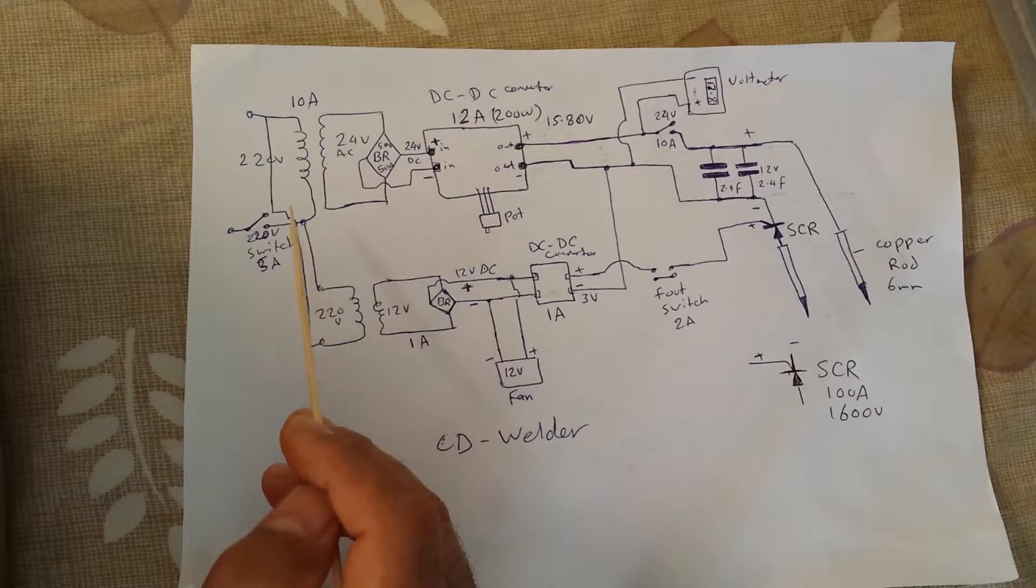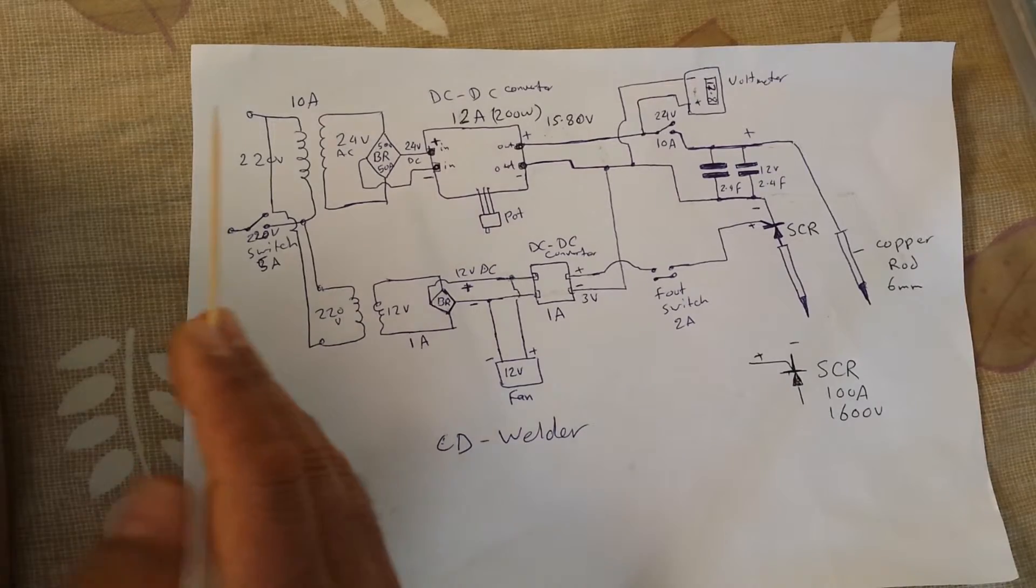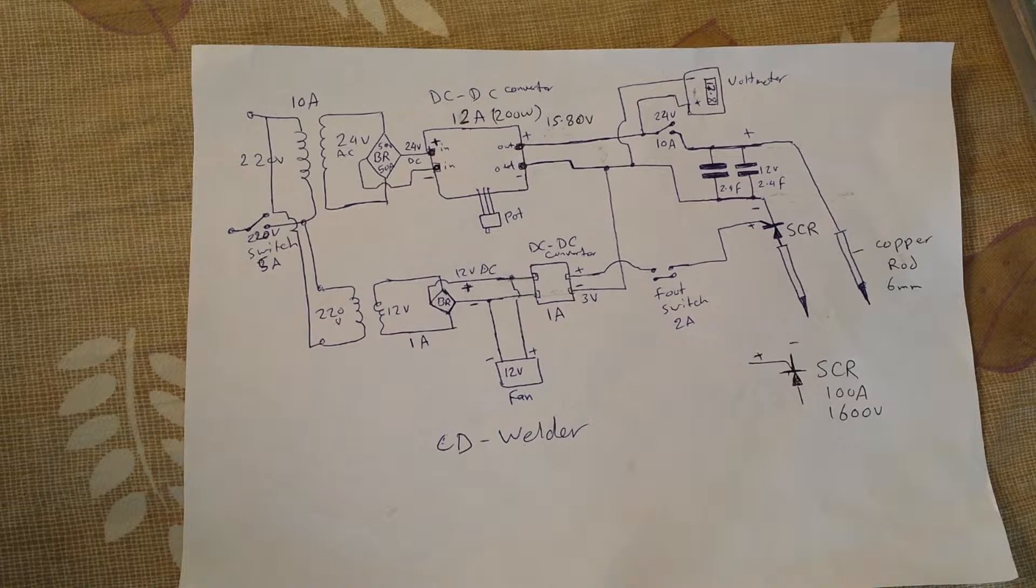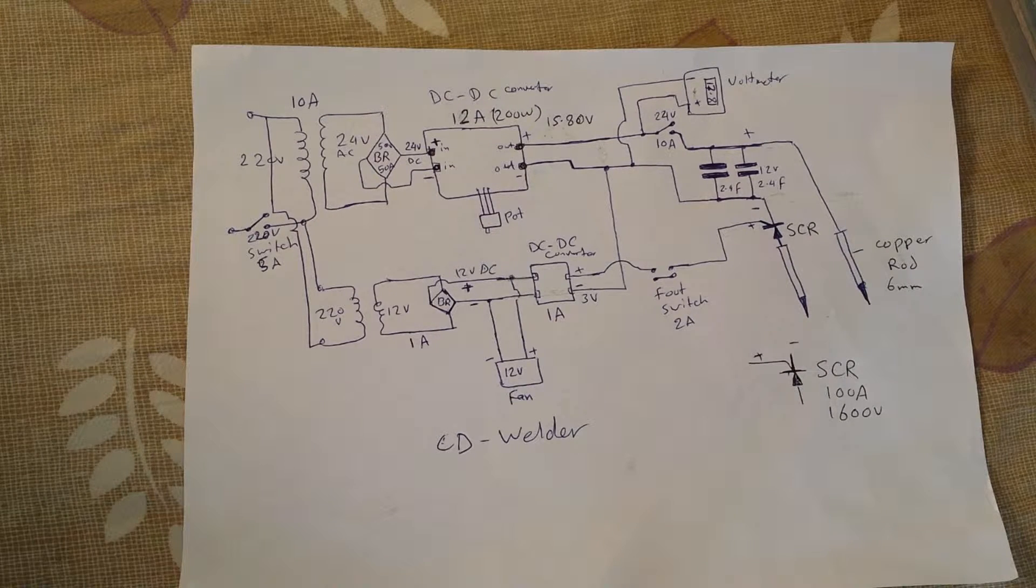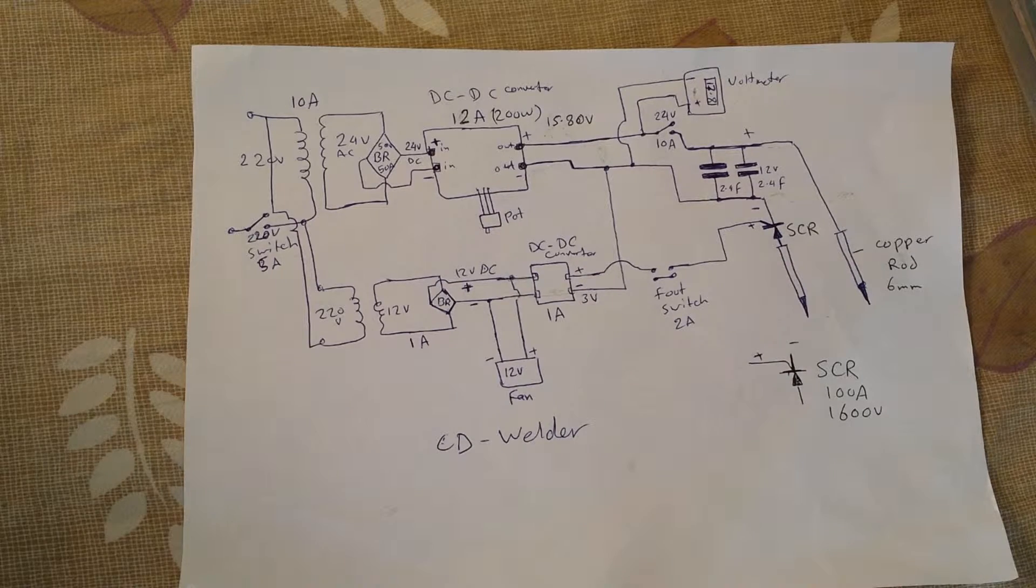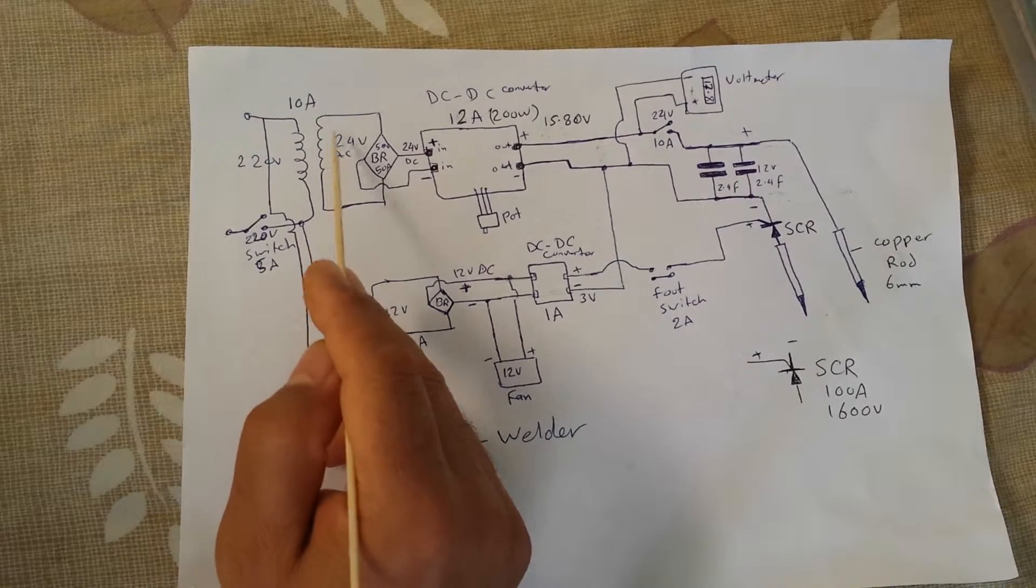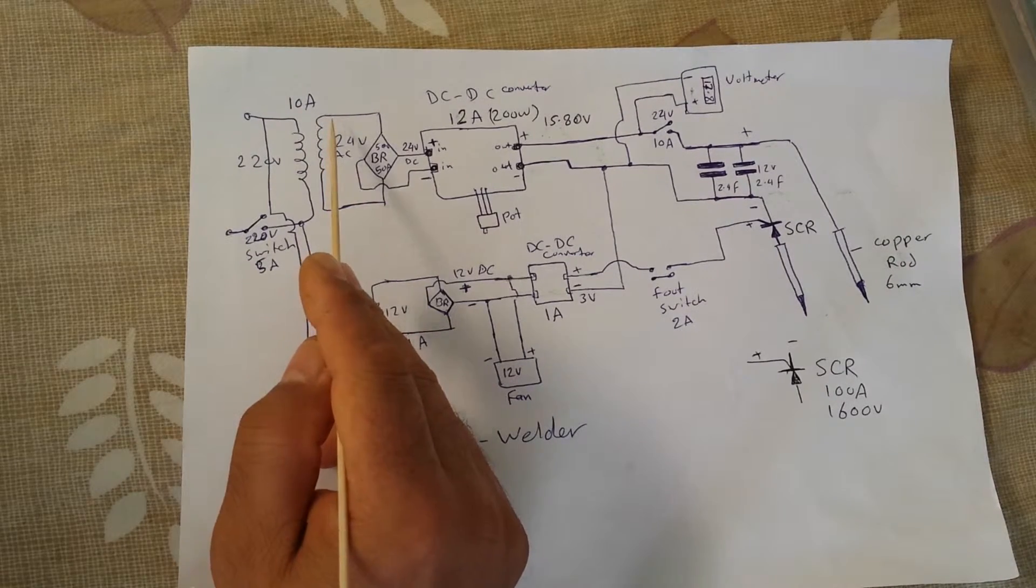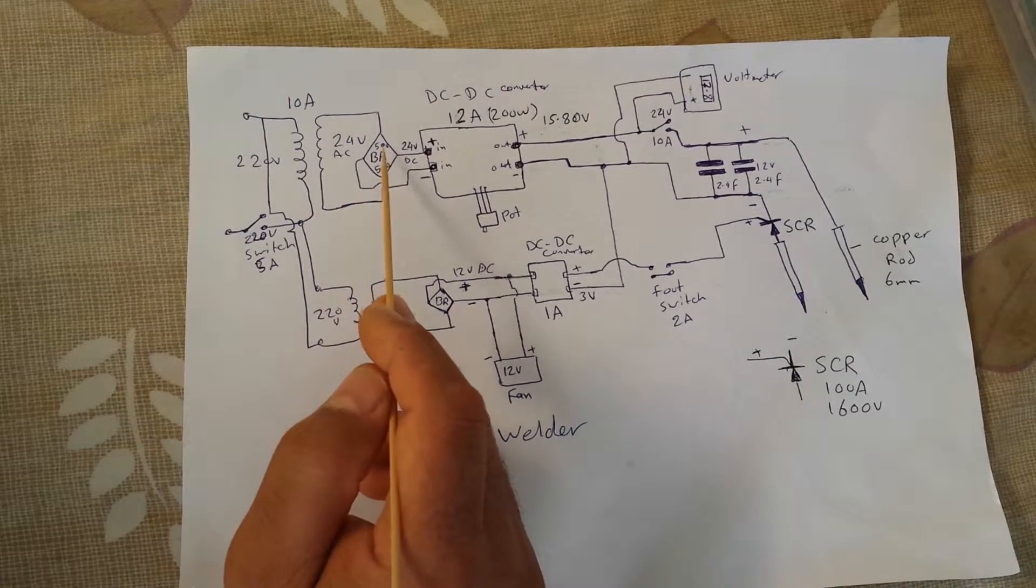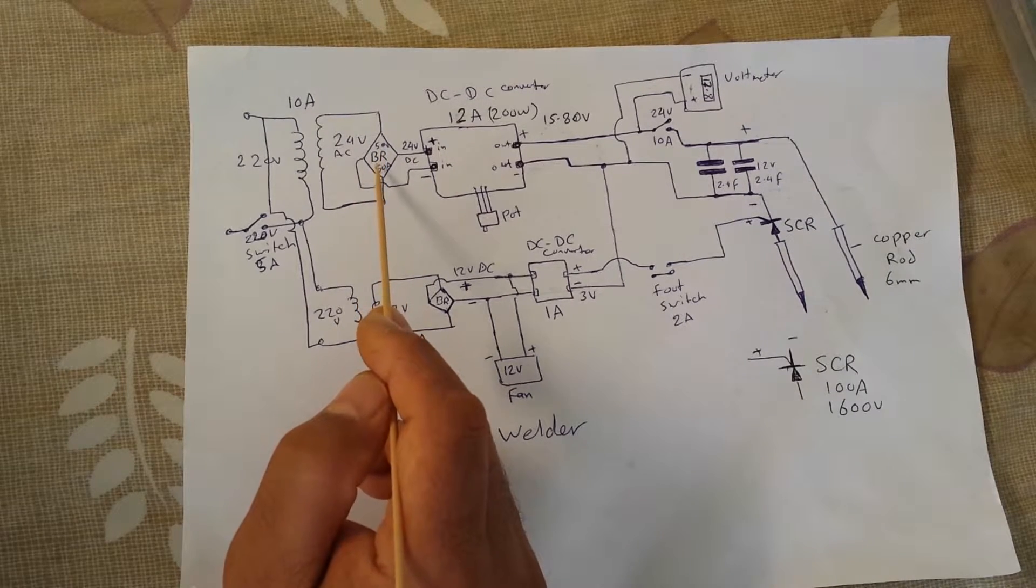What I did is I found I have a MOT, a microwave transformer. I removed the secondary winding, the thin wires and all other things, and I left the primary, the thicker wire. Then I wound 20 or 25 turns and the output of this transformer will be about 24 volts.